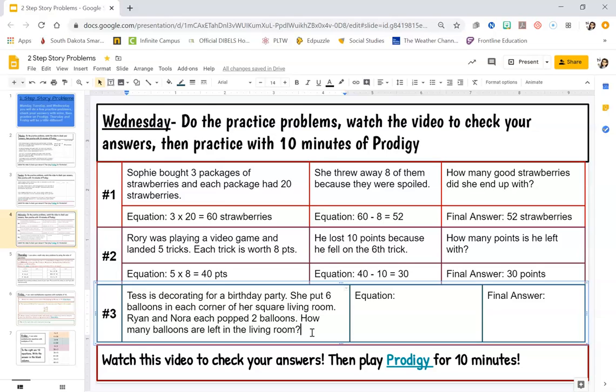How many balloons are left in the living room? This one's tricky, okay. So six balloons times four - in each corner, six in each corner. It's a square living room. I know there's four corners.